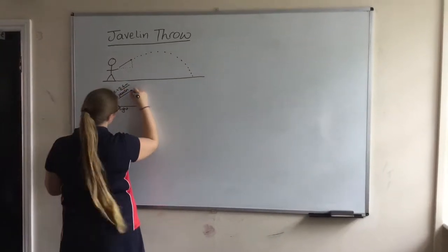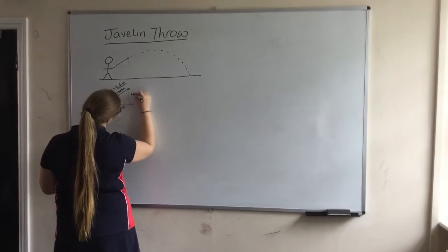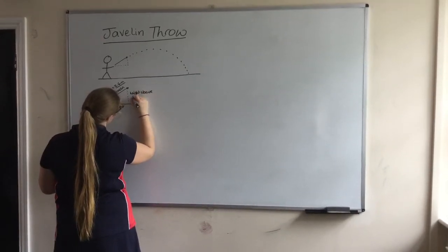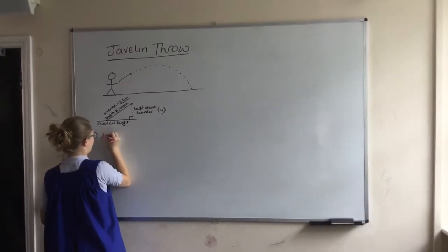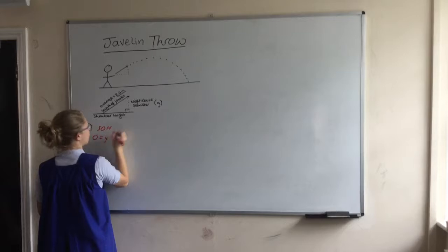The average length of a javelin is 2.6 metres. And we are going to make Y our variable, which is the height above the shoulder.